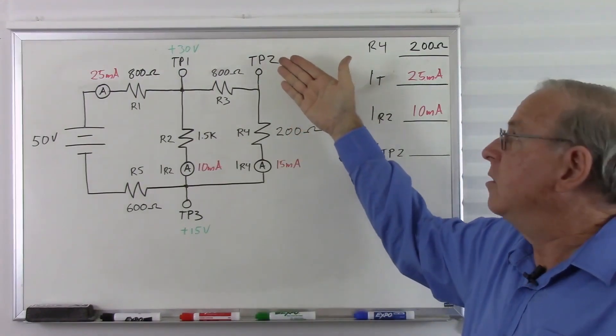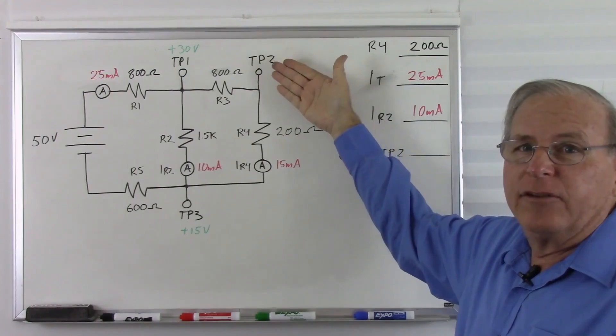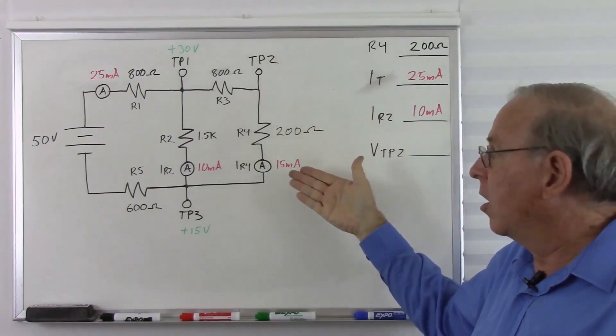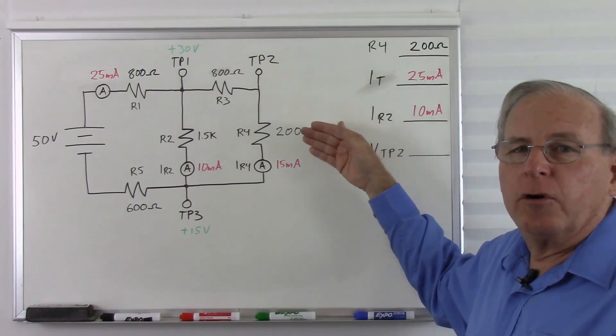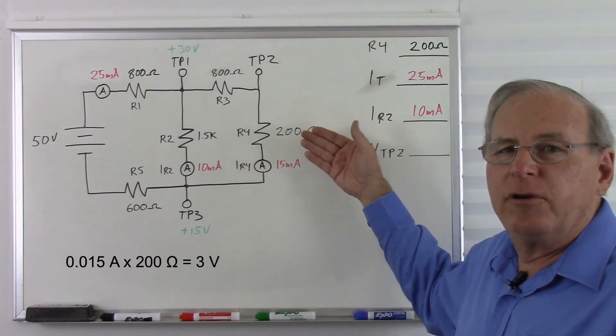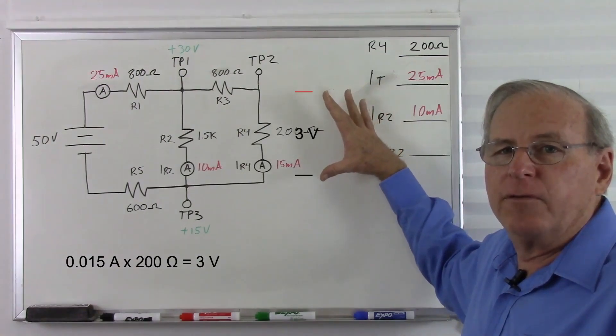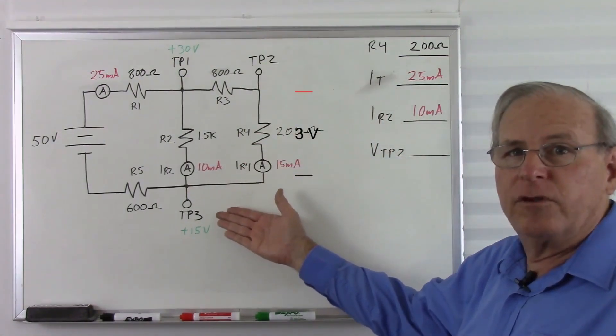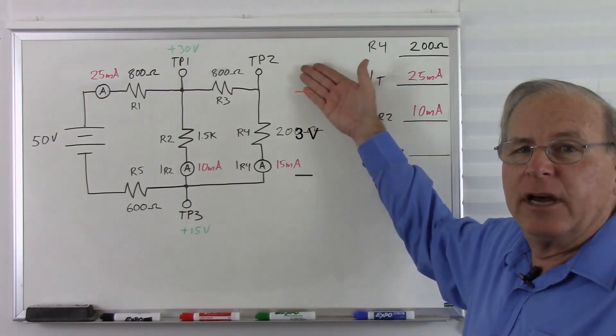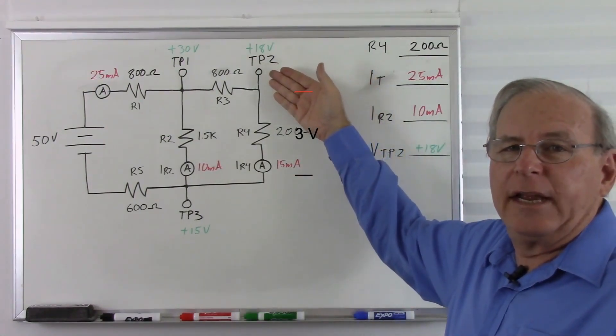And that leaves us with the voltage at test point 2. Probably the easiest way to do this one will be Ohm's Law. So we have 15 milliamps and 200 ohms. So that's going to be 0.015 times 200. That gives us a total of 3 volts across this resistor. So we start with 15 volts here. Add 3, giving us 18 volts at test point 2.